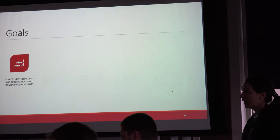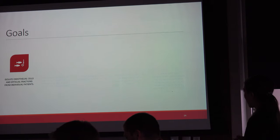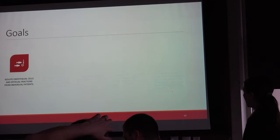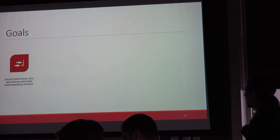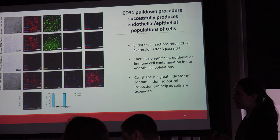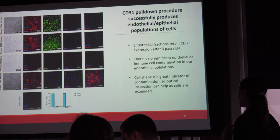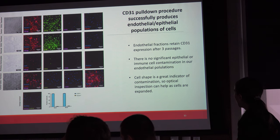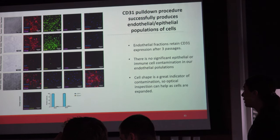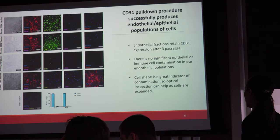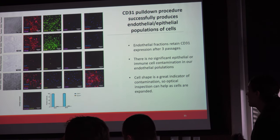The patient underwent nephrectomy of the diseased kidney, so we can now isolate the endothelial and epithelial fractions from the tissue. Immunofluorescence for CD31, EpCAM, actin, and nuclei shows that we can strongly detect CD31 in the endothelial fraction but not in the epithelial fraction, confirming we have distinct populations for both fractions as expected, and we can proceed with building our model.